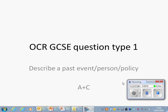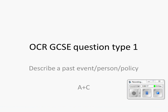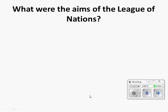OCR GCSE question type 1: describe a past event, person or policy — sections A and C. These are very simple and are often four-mark questions in Paper 1. They simply require you to detail from your own knowledge four different aspects, or two well-explained aspects.